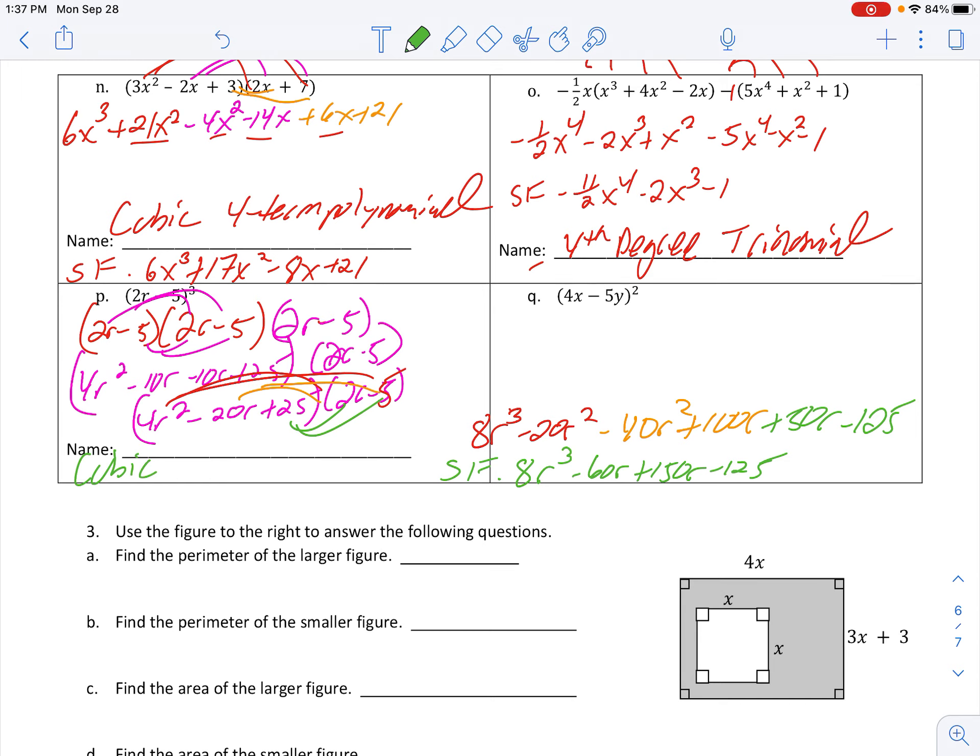And minus 125. So we end up with a cubic 4 term polynomial. And lastly, on letter Q. Expand it out. Got two variables. Who the heck cares? Just kind of do what you've been doing. Distribute the 4x. You get 16x squared and 4x times negative 5. Usually you write those in alphabetical order. So negative 4x times negative 5y is negative 20xy. And then we distribute negative 5y and get another negative 20xy. And then we end up with a plus 25y squared.